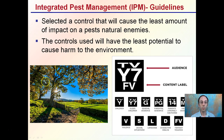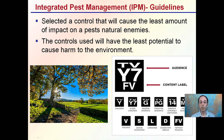The guidelines for IPM are selected to control methods that will cause the least amount of impact on pests and natural enemies. The goal is to get the same end result we want without impacting the environment in other ways. The controls used will have the least potential harm to the environment overall — so while we may want to control one insect pest, we want to make sure the rest of the environment is as minimally impacted as possible.